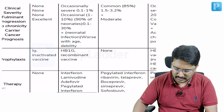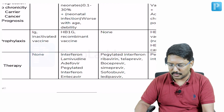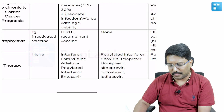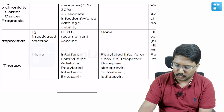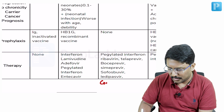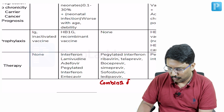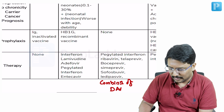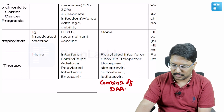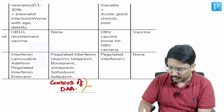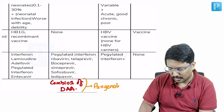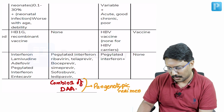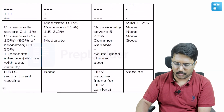Unfortunately, we currently do not have any vaccine for hepatitis C. In terms of treatment, we have moved away from pegylated interferon and ribavirin. We now mostly consider combinations of direct-acting antivirals, and currently most guidelines recommend preferably using pan-genotypic regimens.